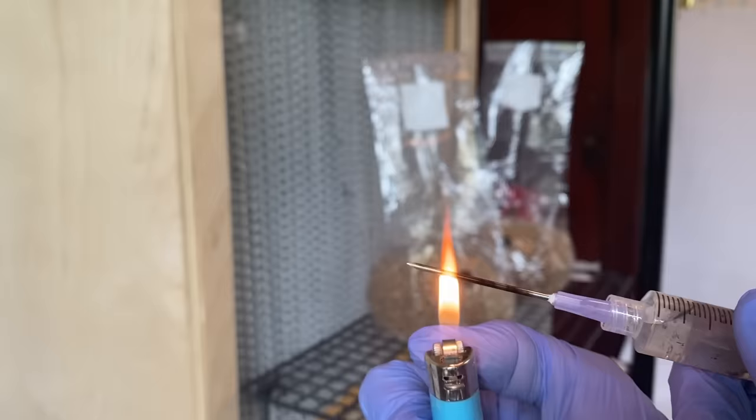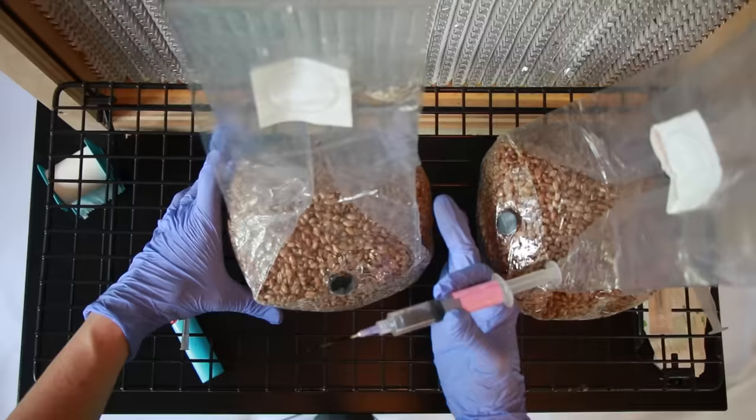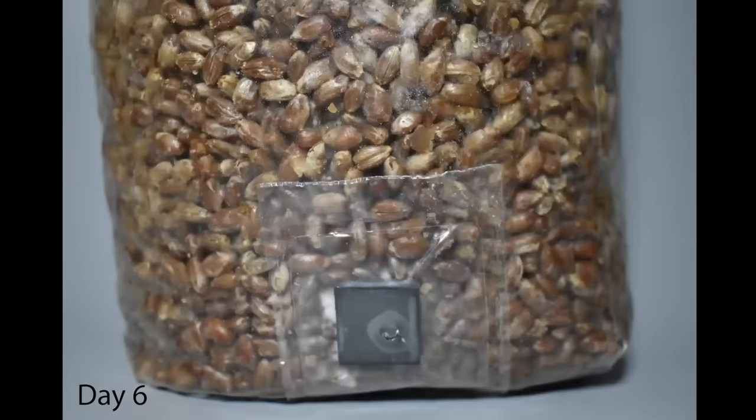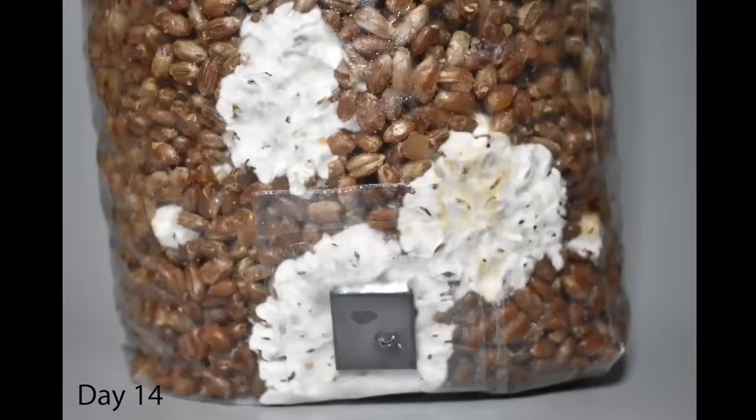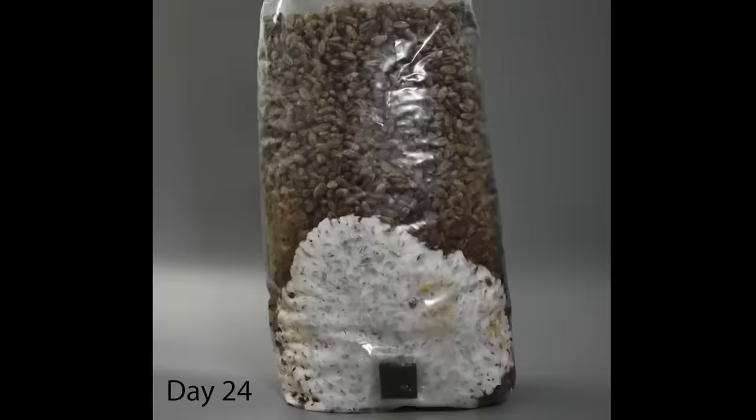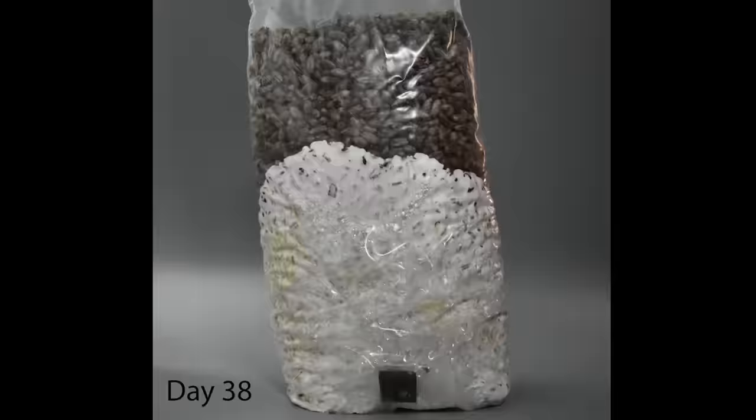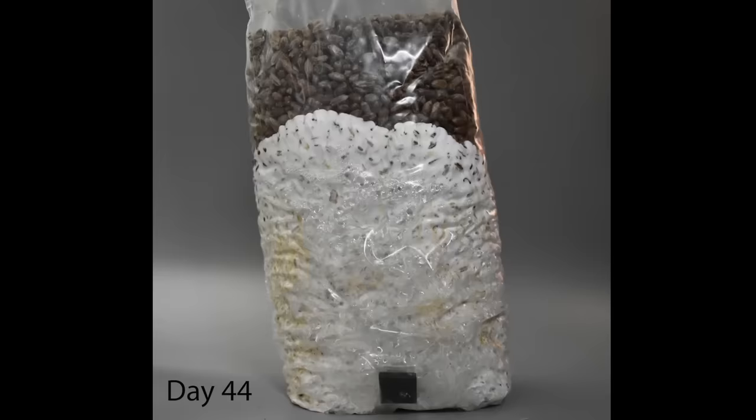If your syringe is used, you will need to flame the needle for 30 seconds. Then you can inject the needle directly into the black injection port, injecting three to five cc's of solution in your spawn bag. Then, after seven to ten days, your spores will germinate and create mycelium and start to colonize the bag.